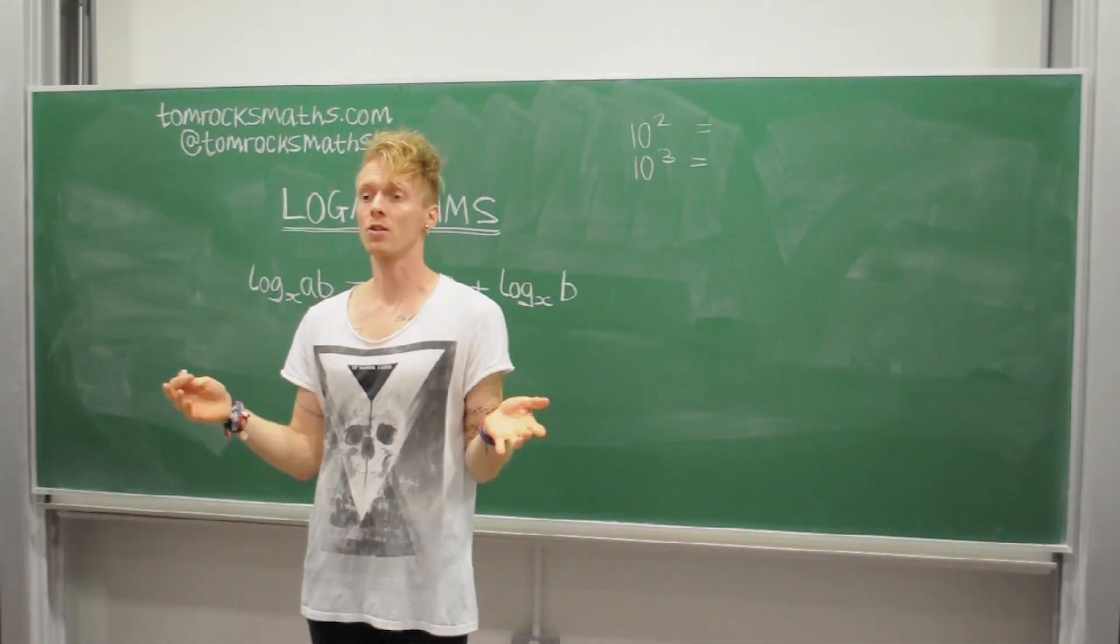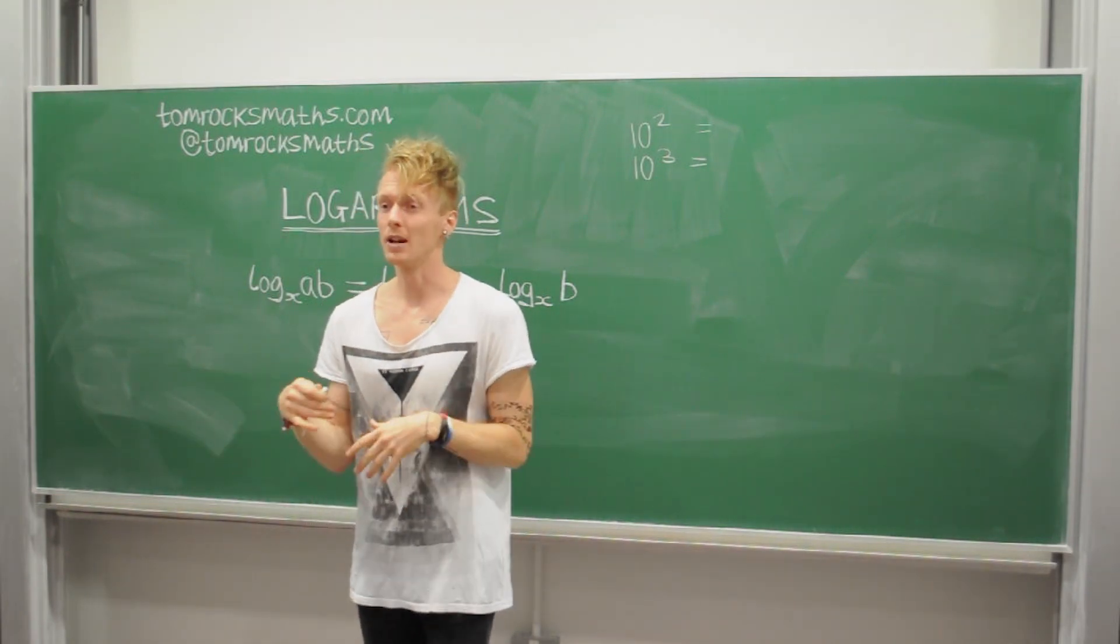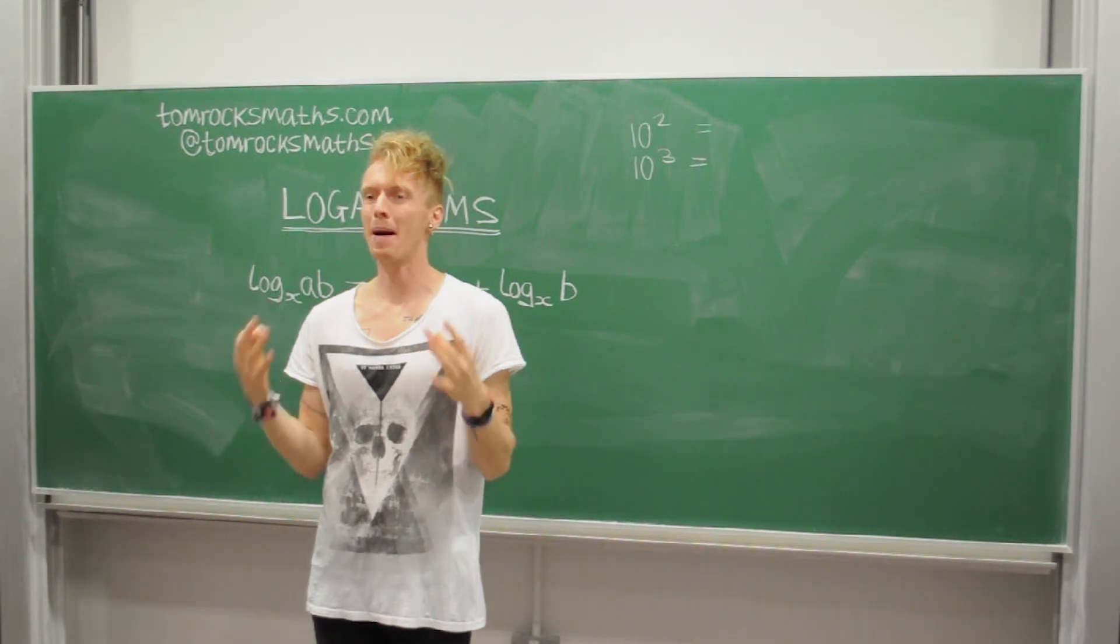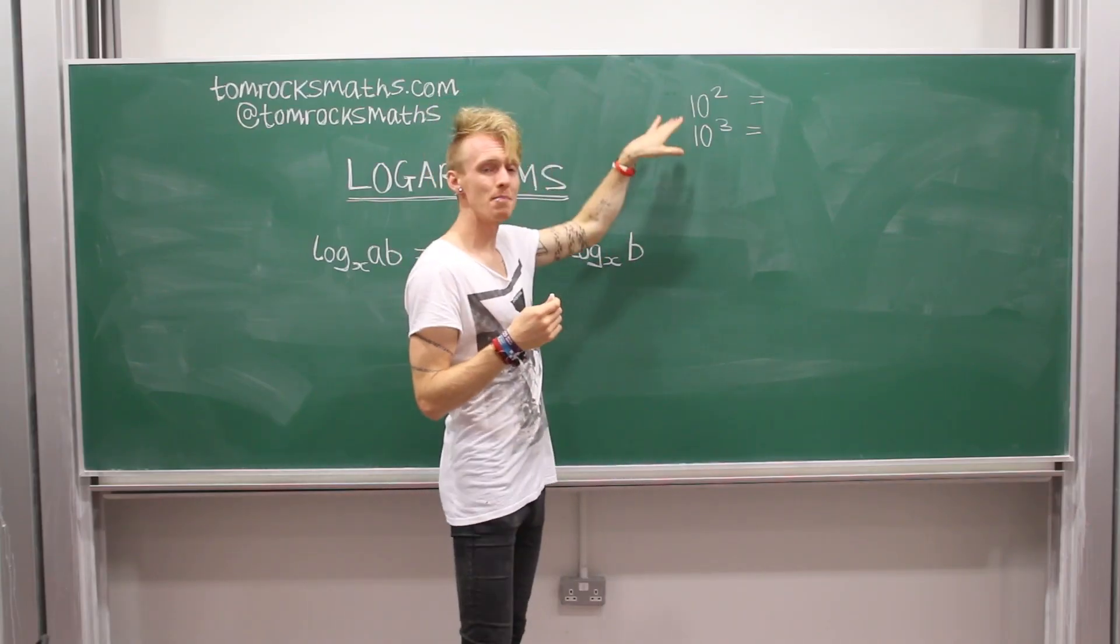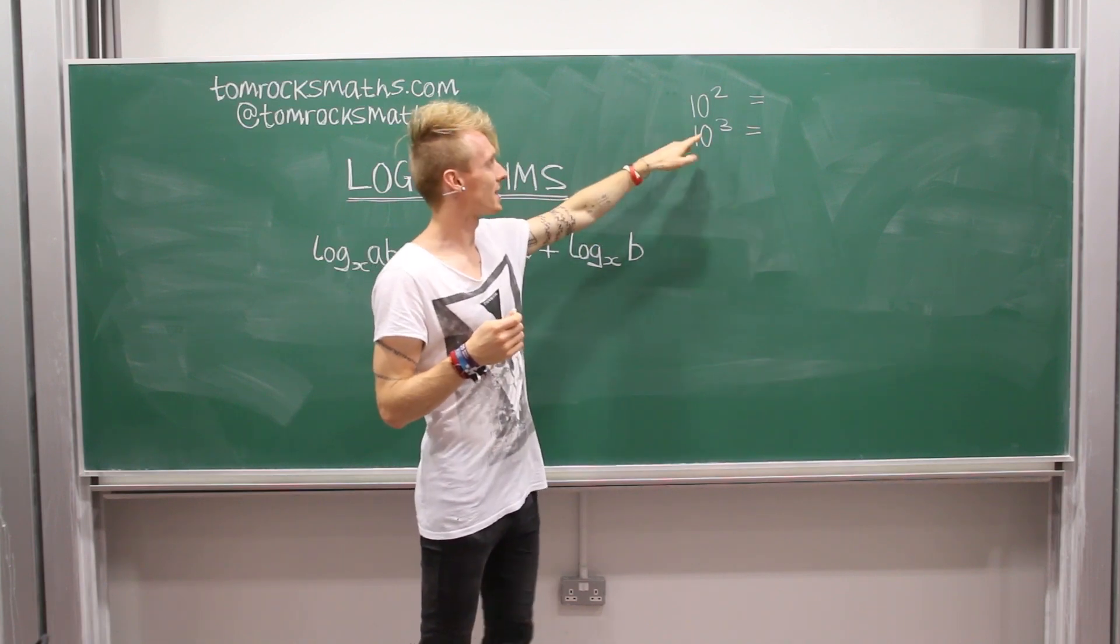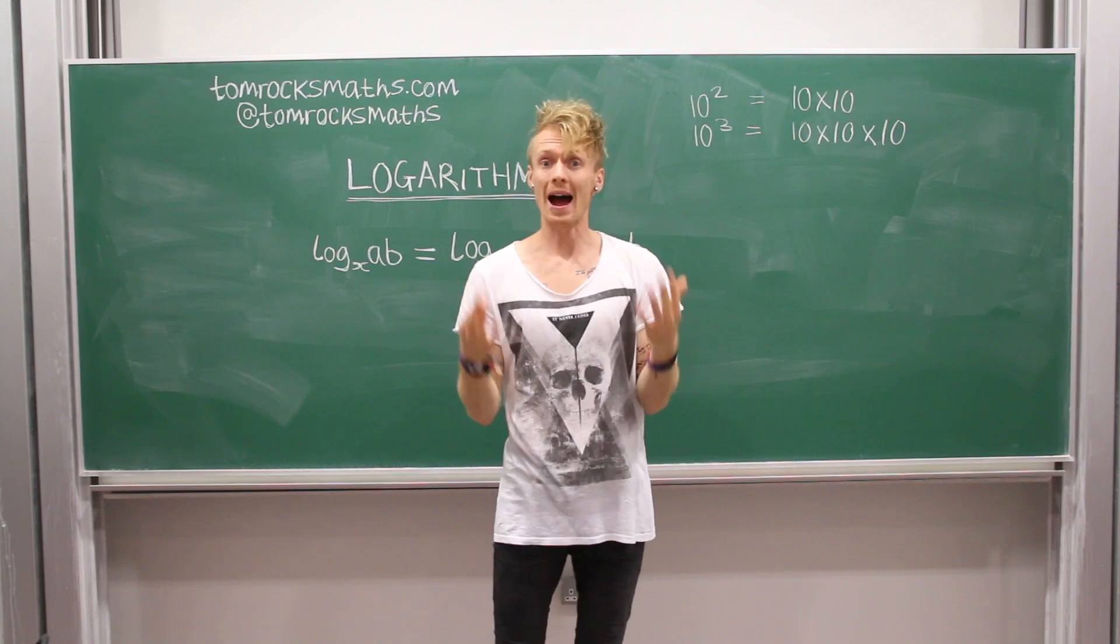For layer number two of the logarithm equation, we're going to look at where logarithms came from. And in order to do that, we need to think about powers of numbers. So if we take the two simple examples of 10 squared and 10 cubed,